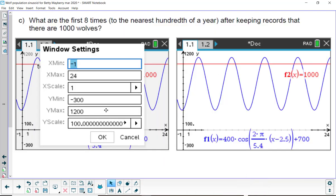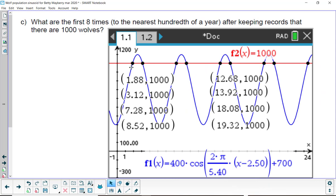And what's nice about inspire is you can find 8 points of intersection all at once. I changed the window so it would go to 24. So, you get 2, 4, 6, 8, actually 9 points of intersection here. And using the geometry intersection tool, you can find all the coordinates at one time. And so, I rounded them to the nearest hundredth. And there are your 8 times to the nearest hundredth a year after keeping records that there are a thousand wolves.